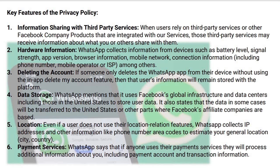Regarding data storage — WhatsApp mentions that it uses Facebook's global infrastructure and data centers, including those in the US, to store user data. It also states that data in some cases will be transferred to the US. So Facebook's affiliate companies and the US will have access to your data. Even if a user does not use location-related features, WhatsApp will collect your IP address, your phone number code, and your area code, from which it can determine where you live. WhatsApp also says that if anyone uses their payment services — and WhatsApp payment services have started — then your bank account information will also be stored with them.